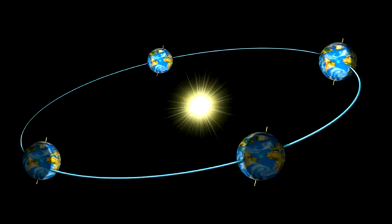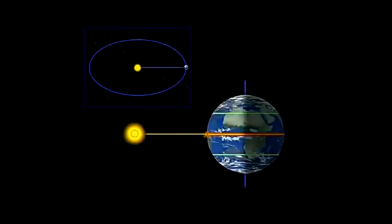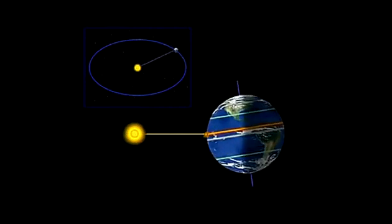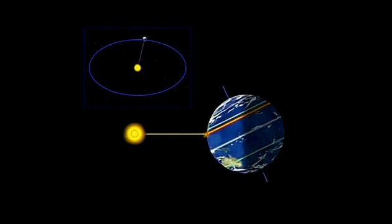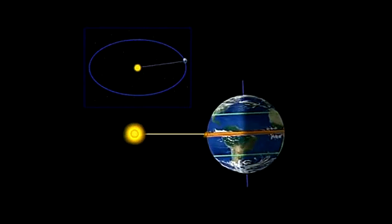The March equinox marks the first day of spring for anybody living in the northern hemisphere, and the first day of autumn for anybody living in the southern hemisphere. The March equinox is the moment the sun crosses the celestial equator, an imaginary line in the sky above Earth's equator, from south to north.